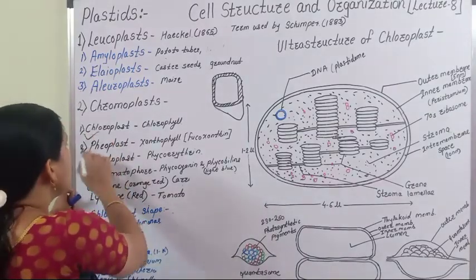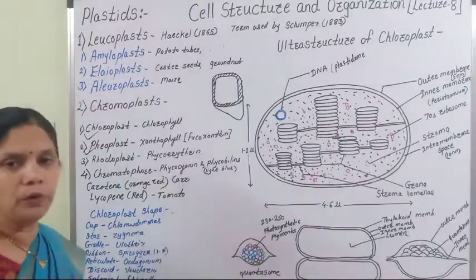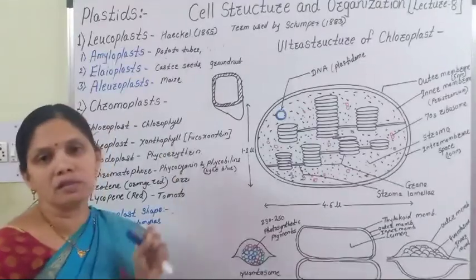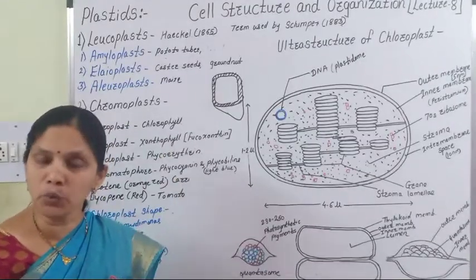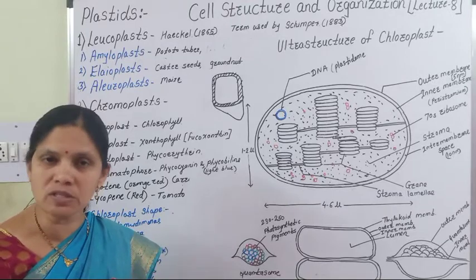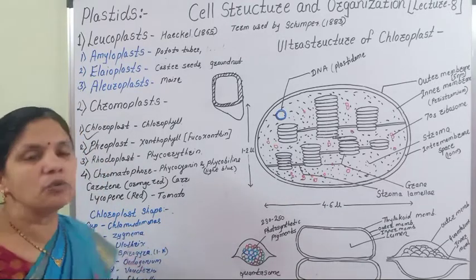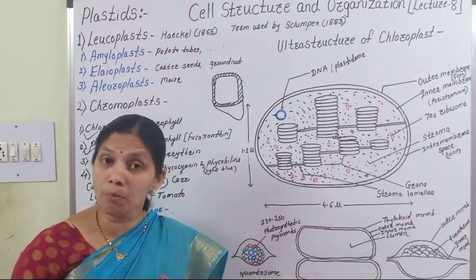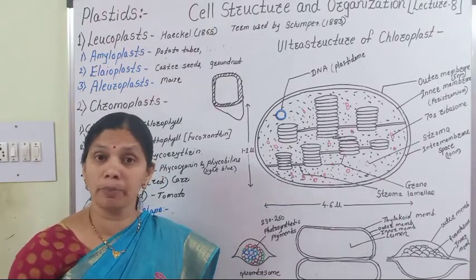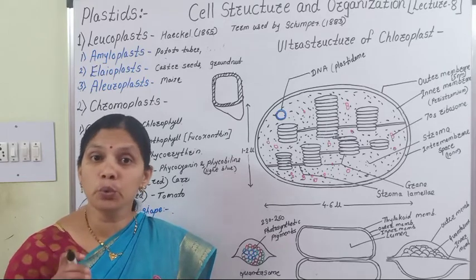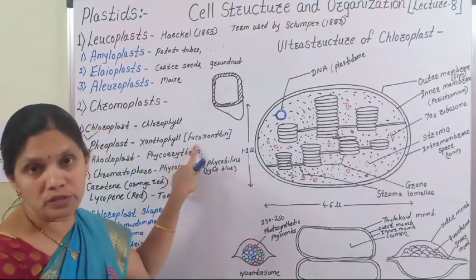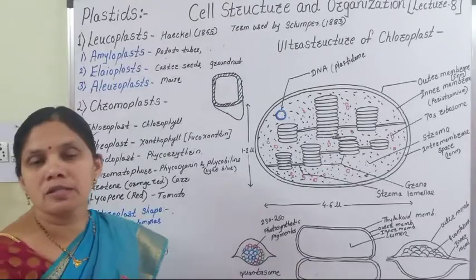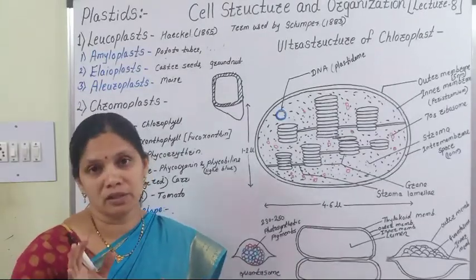The next type is Pheoplasts. In Pheoplasts, xanthophyll — that is, fucoxanthin — is present, and due to the presence of this fucoxanthin, these Pheoplasts appear brown in color. These Pheoplasts are present in brown algae.